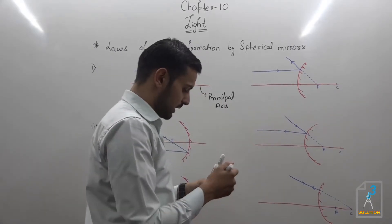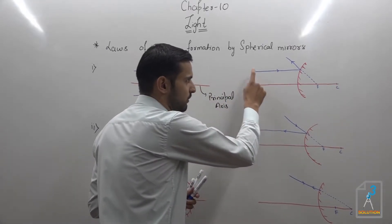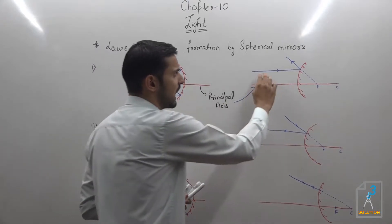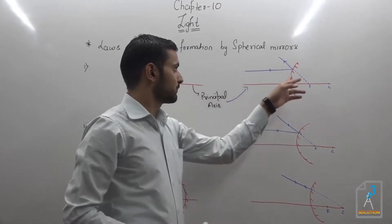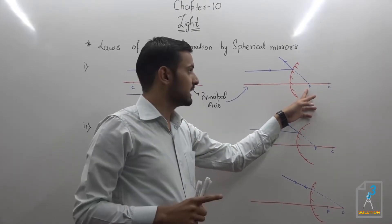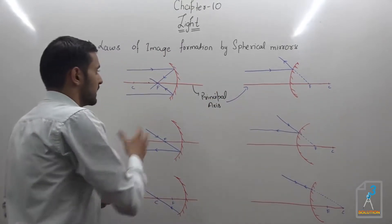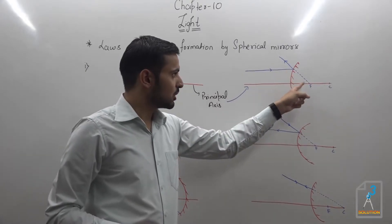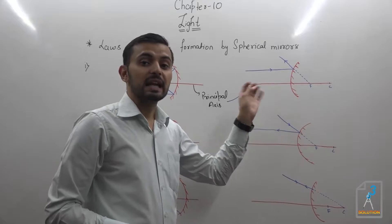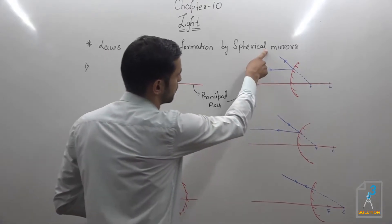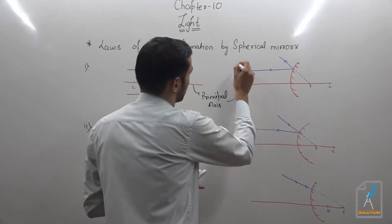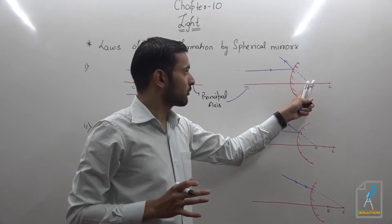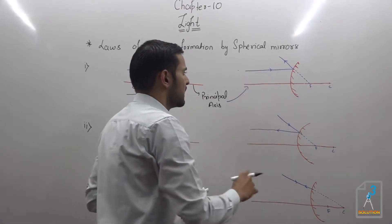Now let's come to the convex mirror — how it basically differs. When a parallel ray of light comes parallel to the principal axis and hits the convex mirror, after reflection it diverges, but it appears to cut the principal axis at a point that is called the focus of the convex mirror.